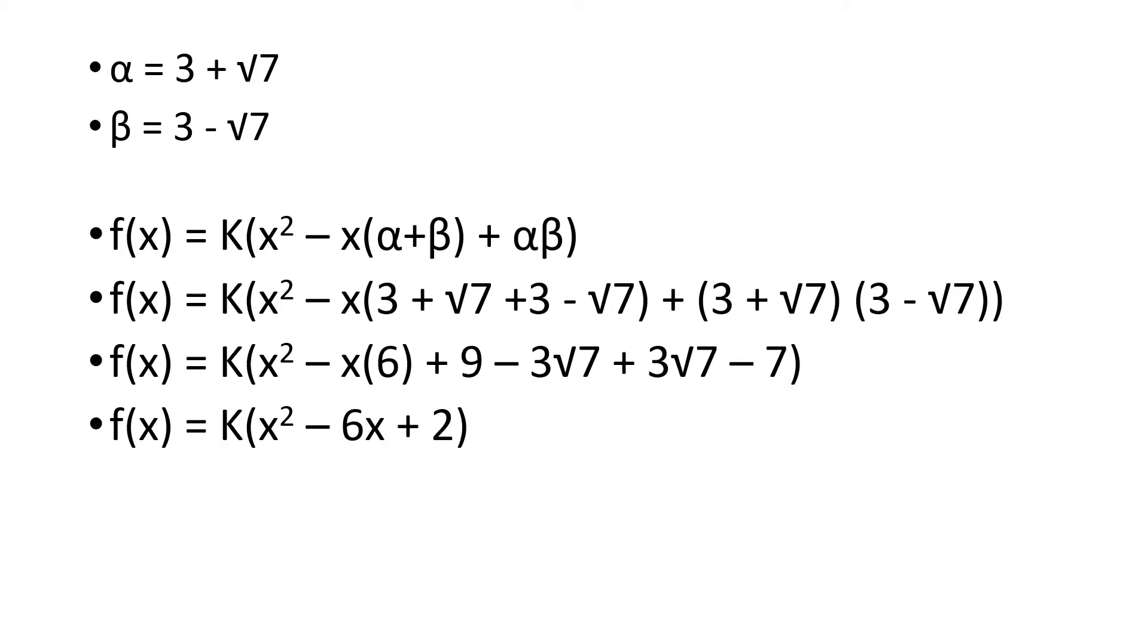Moving forward, alpha equals 3 plus root 7 and beta equals 3 minus root 7, because these were the values that were given to us in the question.